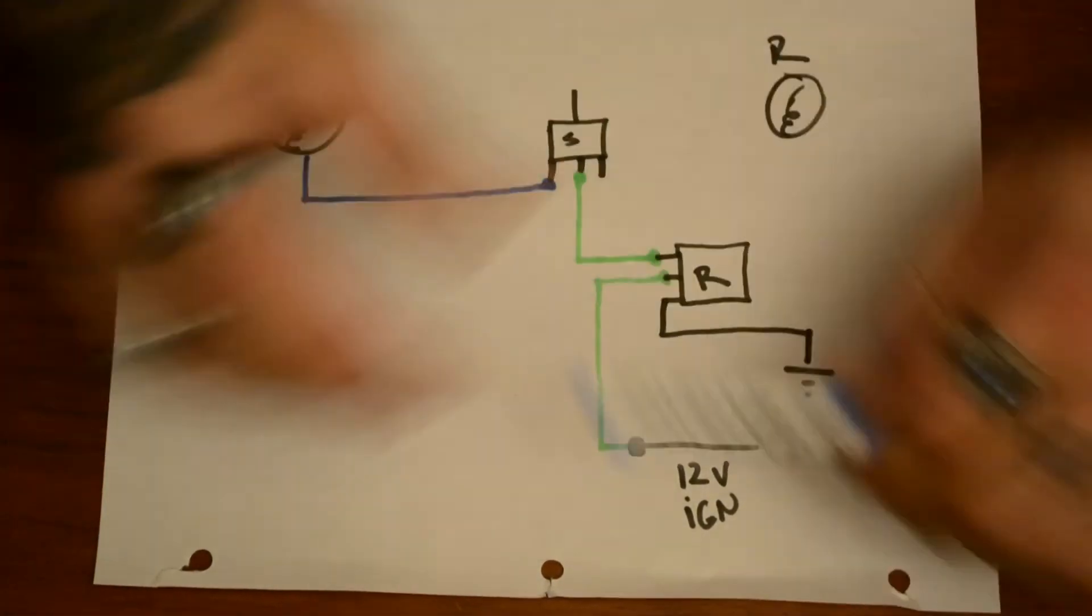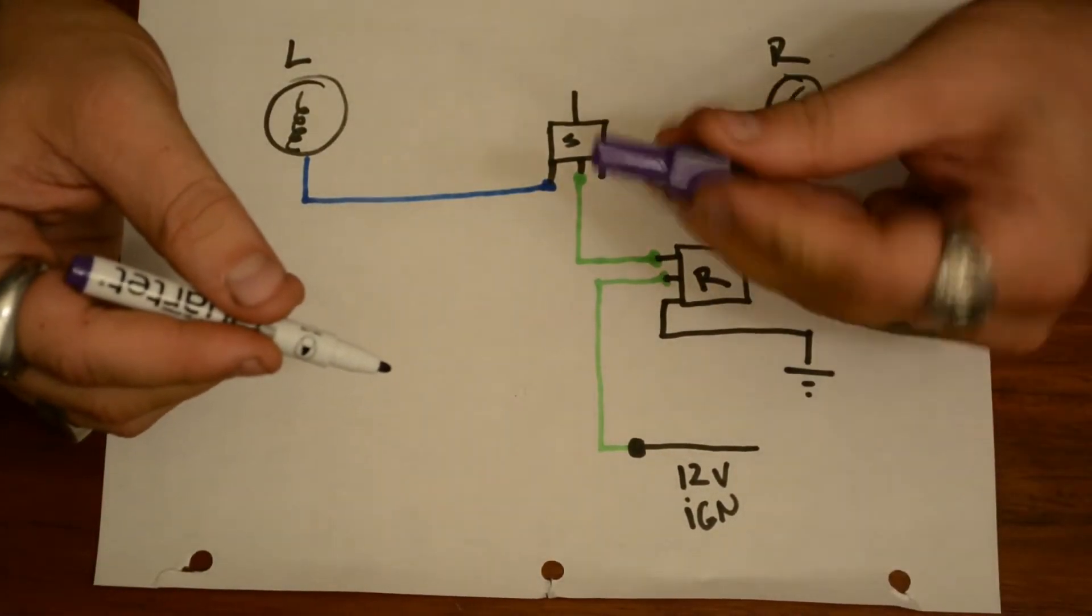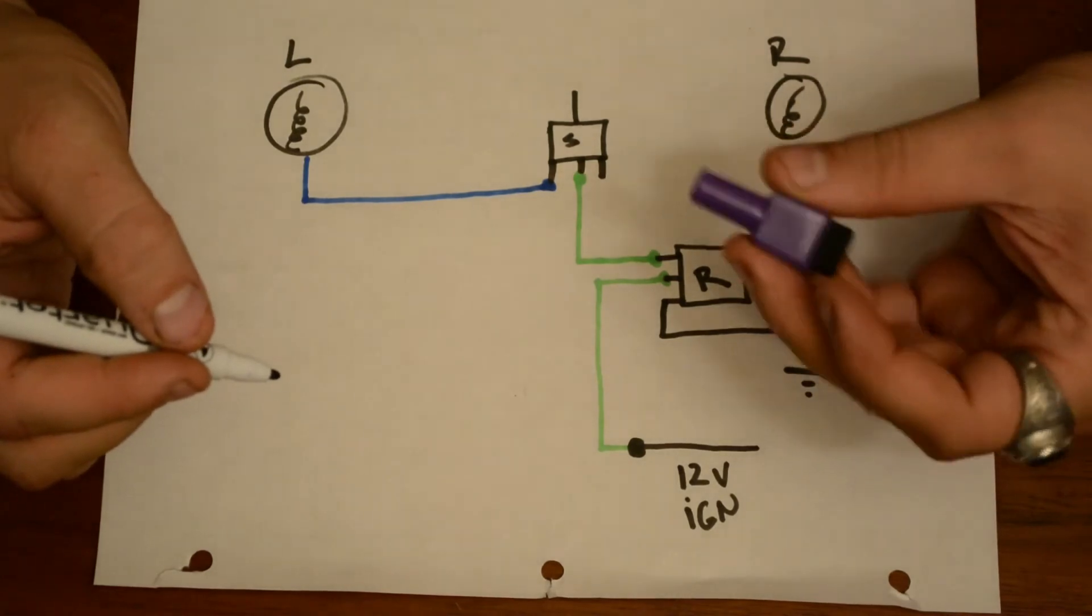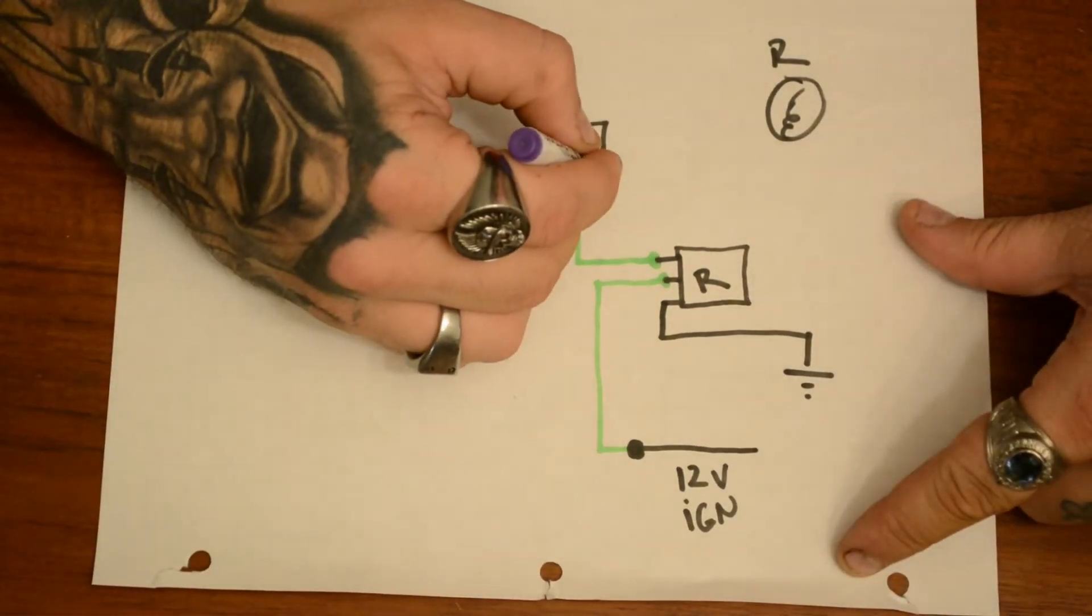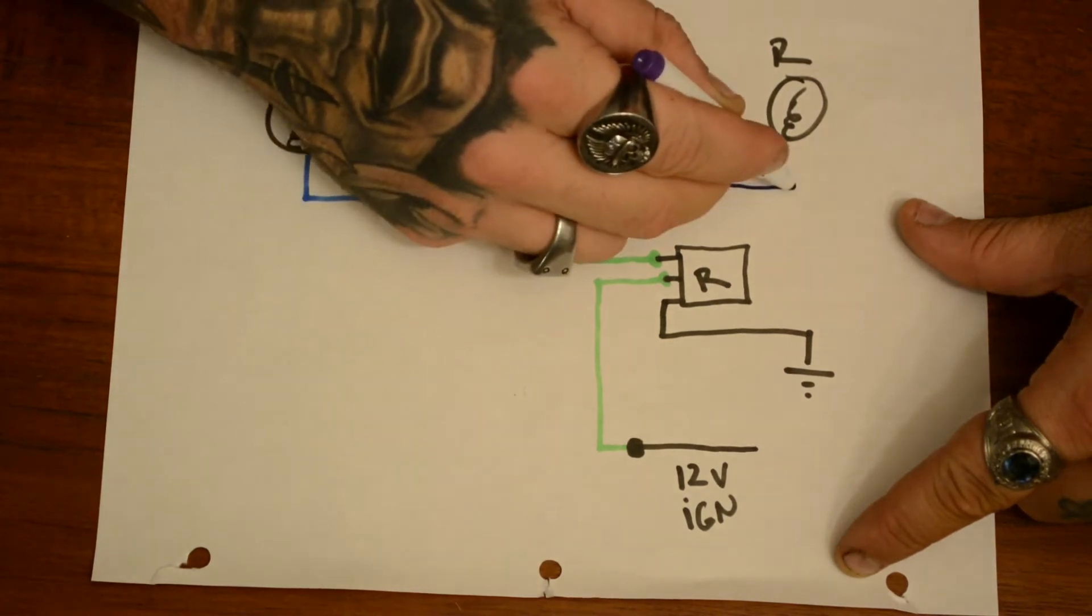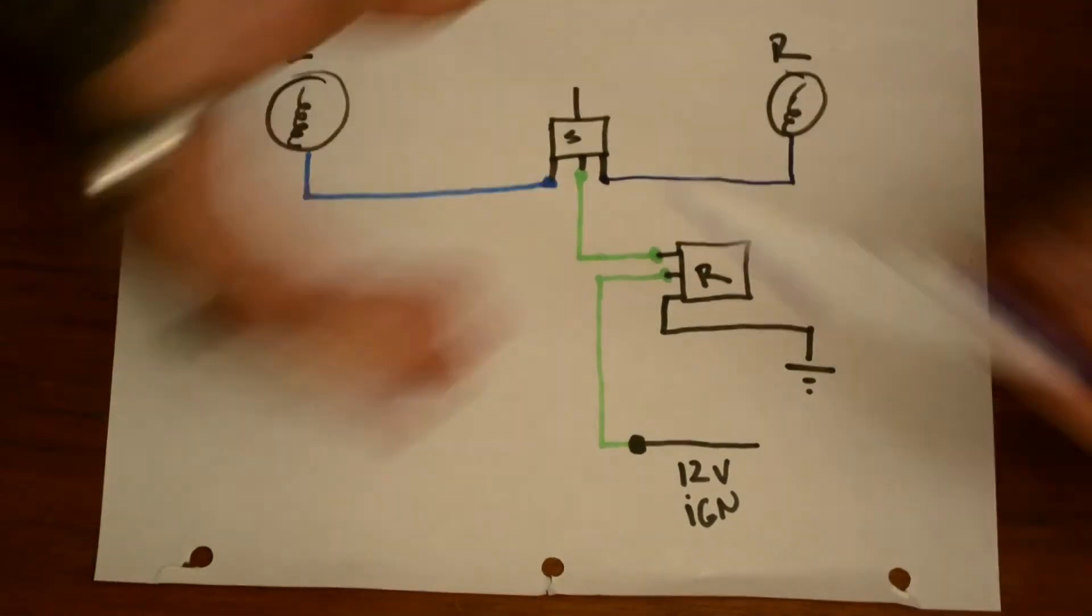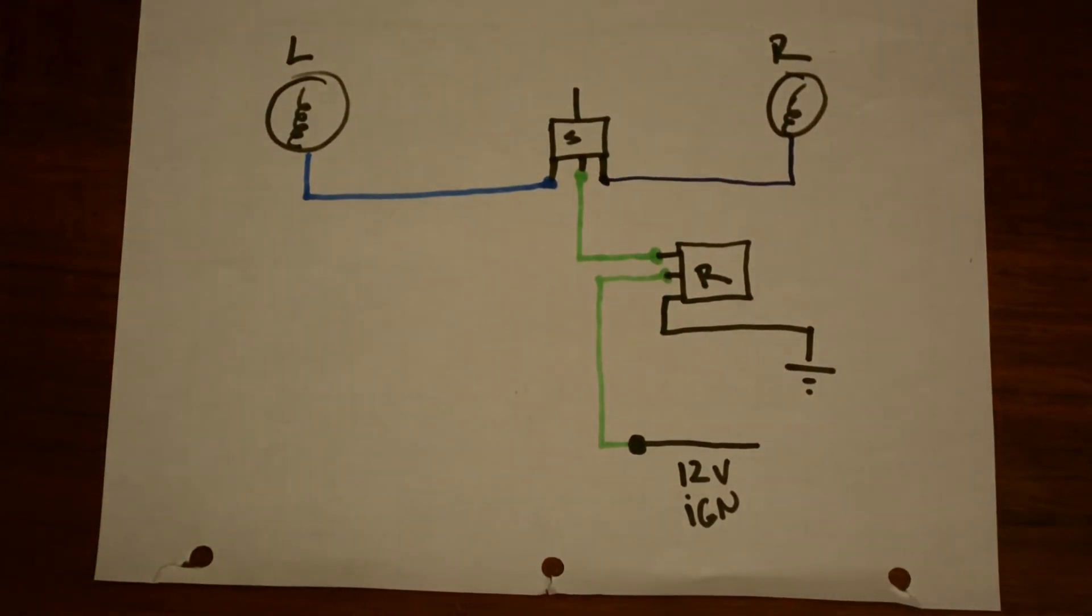So this color is going to represent the left turn signal circuit, left turn signal wiring. So you make another junction there, it's going to come over and it's going to go to your left turn signal. Now we're going to have the right turn signal which will be this color. I keep saying this color because I'm colorblind. So you're going to have a junction at the switch and it's going to come over and it's going to go to your right turn signal.